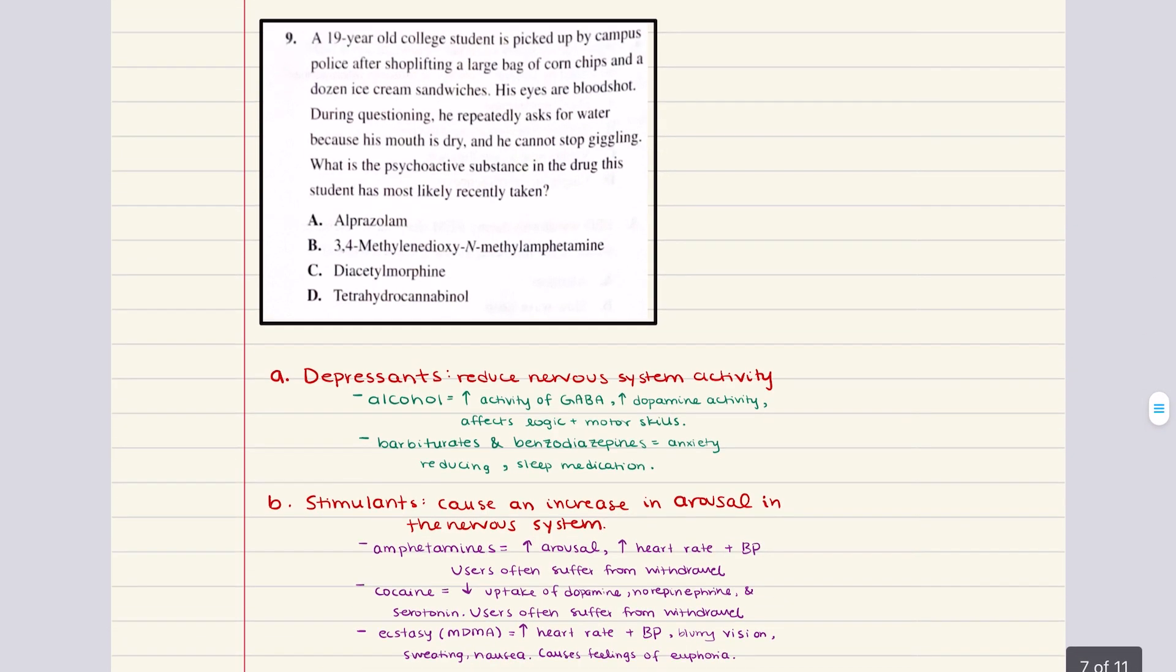Problem nine says a 19-year-old college student is picked up by campus police after shoplifting a large bag of corn chips and a dozen ice cream sandwiches. His eyes are bloodshot and during questioning, he repeatedly asks for water because his mouth is dry and he can't stop giggling. What is the psychoactive substance in the drug this student has most likely taken?